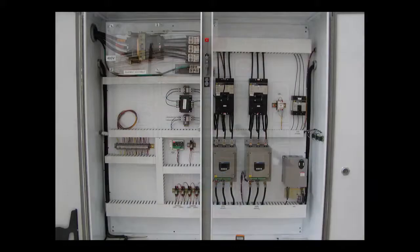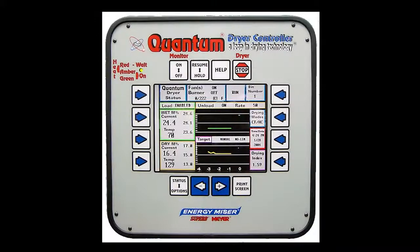An AC drive allows the unload to speed up or slow down. The quantum controller regulates the unload rate based on desired exit moisture of the grain.